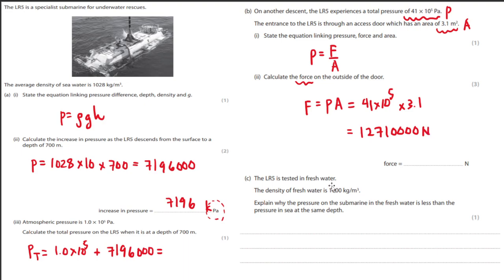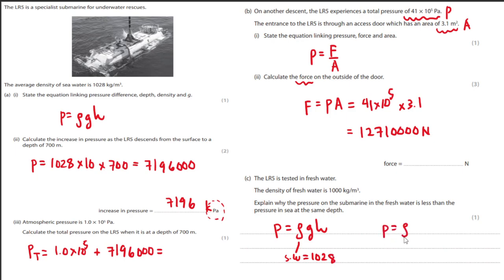The LR5 is tested in fresh water, whose density is less than seawater. The pressure in fresh water is less than the pressure in the sea at the same depth. Using P equals rho GH, the density of seawater is 1028, but in fresh water density is less, which means pressure would be less as well. That's one mark.